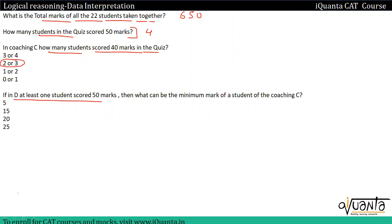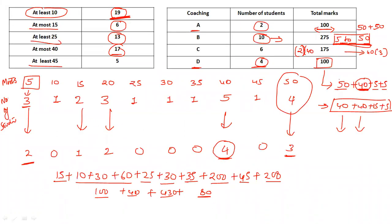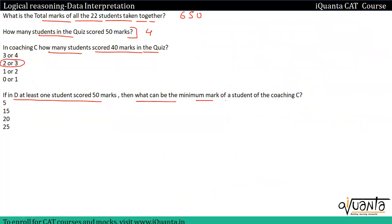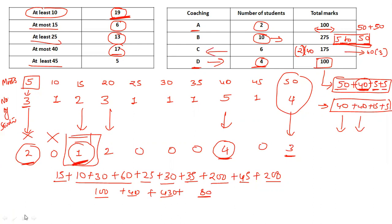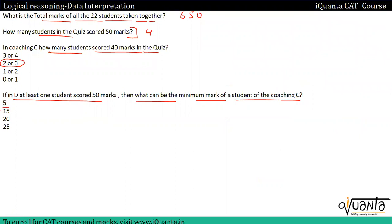If in coaching D at least one student scored fifty marks, then the first case we noted applies. Then what is the minimum mark of a student of coaching C? Now both fives will go with coaching D — you can see both fives go with D. Ten is already used up, so the minimum remaining value is fifteen. That student is left over, so fifteen goes with coaching C. Therefore the minimum mark is 15.